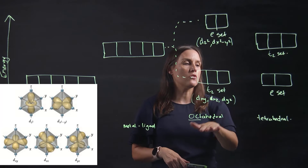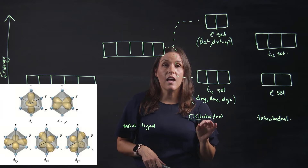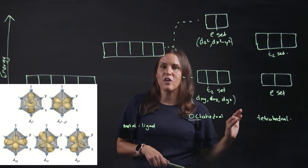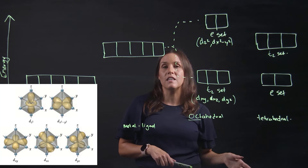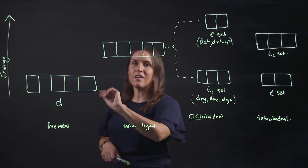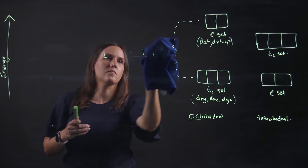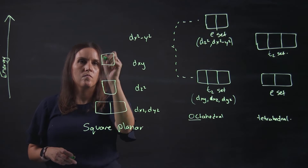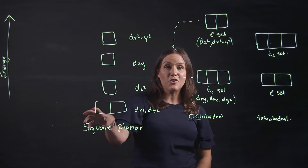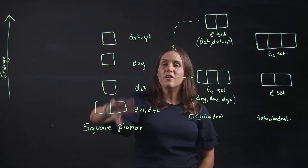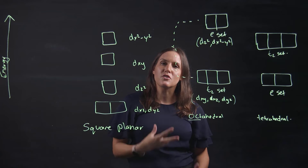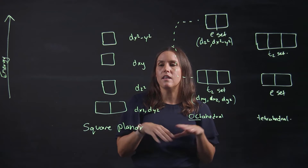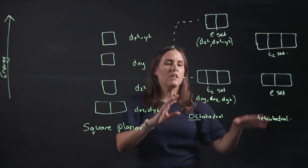The last complex type is the square planar. This is very different to both the octahedral and the tetrahedral. So this is your square planar — you can see it has a very different splitting pattern, and that's due to the repulsion of the four ligands that are in the plane.